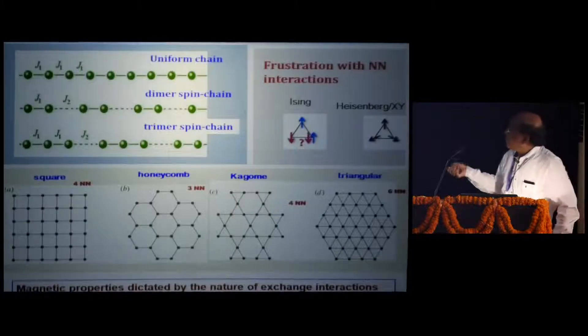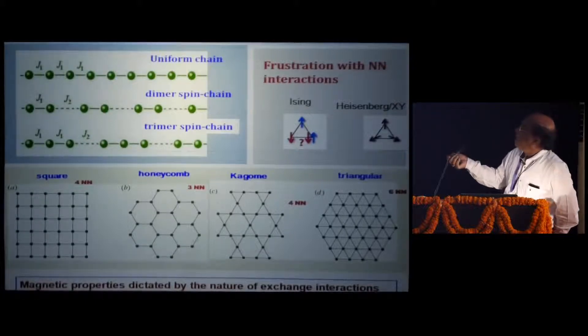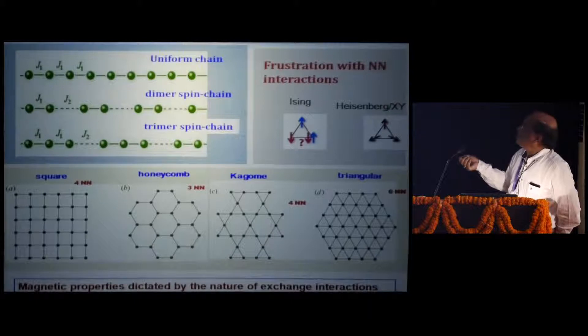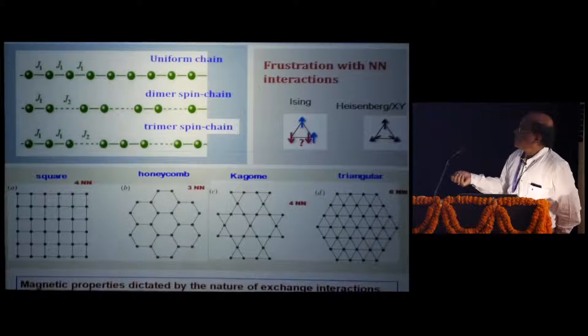We have been working on several magnetic systems. Today, particularly talking about the low-dimensional magnetic systems, I must clarify the systems which we are dealing with are naturally occurring materials. They are not artificially grown like thin films. We have been working on several classes of materials like uniform chains, dimer spin chains, or trimer spin chains.